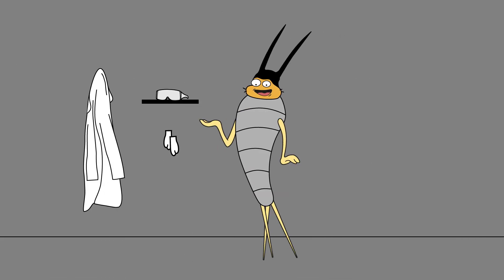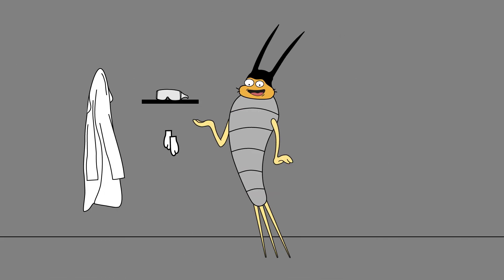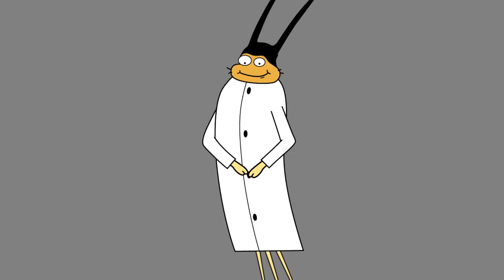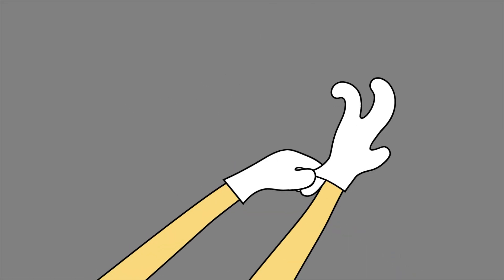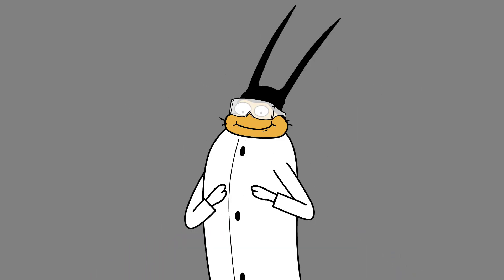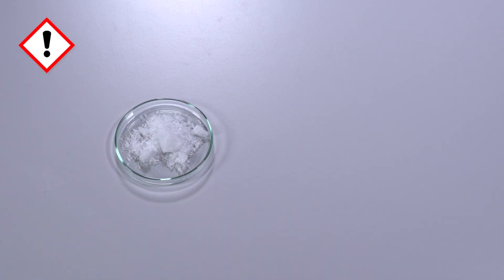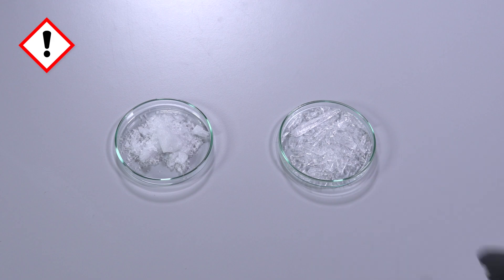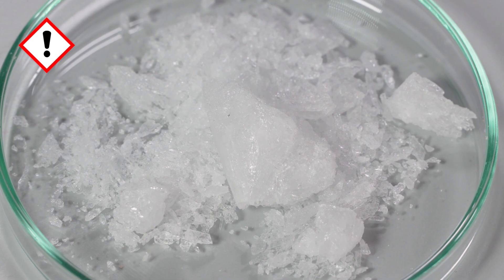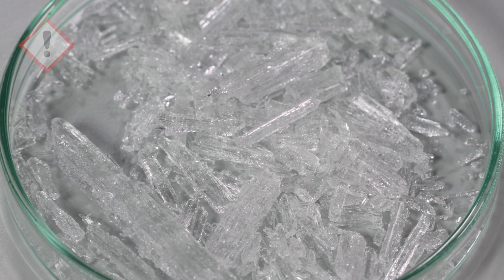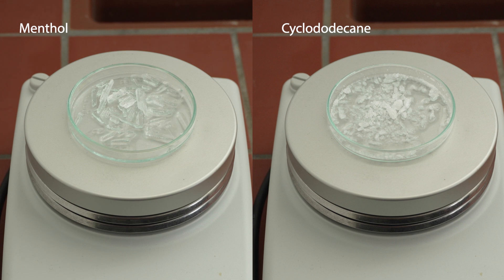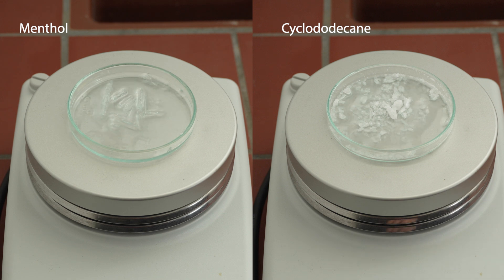When handling volatile binders and their associated solvents, it is important to wear personal protective equipment in the form of gowns, gloves and glasses. Whether cyclododecane or menthol is used depends on the object, the planned action and personal preference. The substances differ in their properties, such as melting point and the way in which they are used.